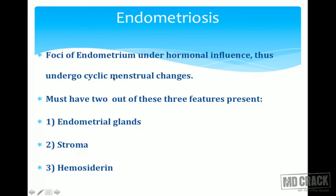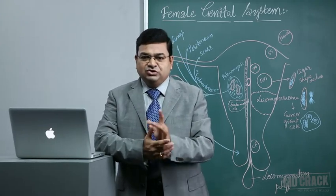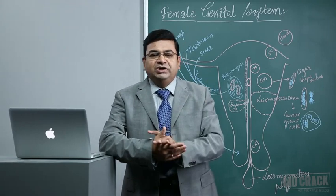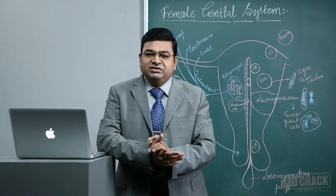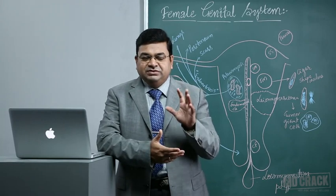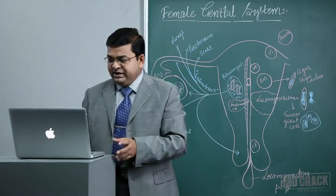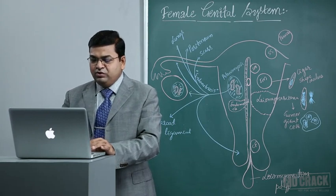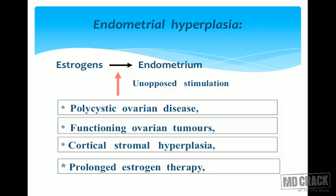Endometriosis affects around 10% of women. The ectopic foci respond to hormonal influences and show cyclic menstrual changes. The pathological criteria for diagnosis require at least two of three features: endometrial glands, endometrial stroma, and hemosiderin-laden macrophages (which engulf RBCs from hemorrhage). Most commonly we see glands and stroma; hemosiderin-laden macrophages are seen less frequently.